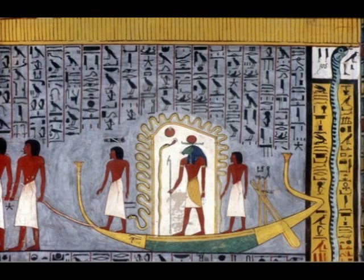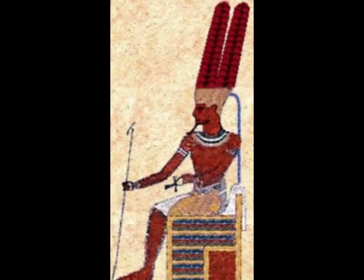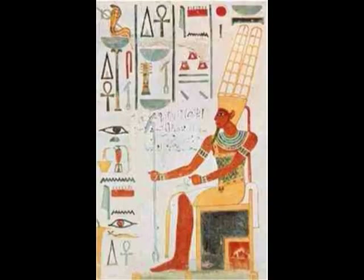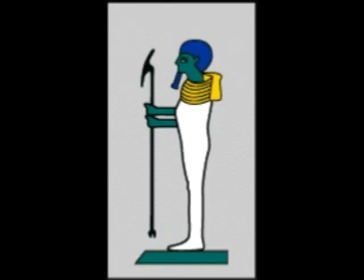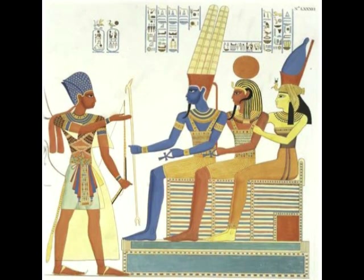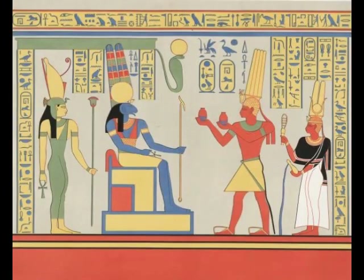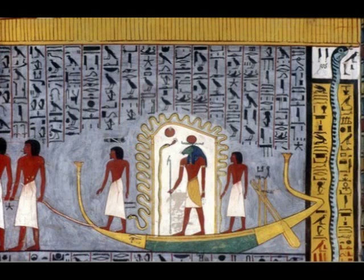The Was scepter is a staff topped with the head of a canine — possibly Anubis by the time of the New Kingdom, 1570–1069 BCE — but earlier a totemic animal like a fox or a dog. The Was scepter evolved from the earliest scepters, a symbol of royal power known as the Heqat, seen in representations of the first king, Narmer, circa 3150 BCE, of the early dynastic period, circa 3150–2613 BCE.